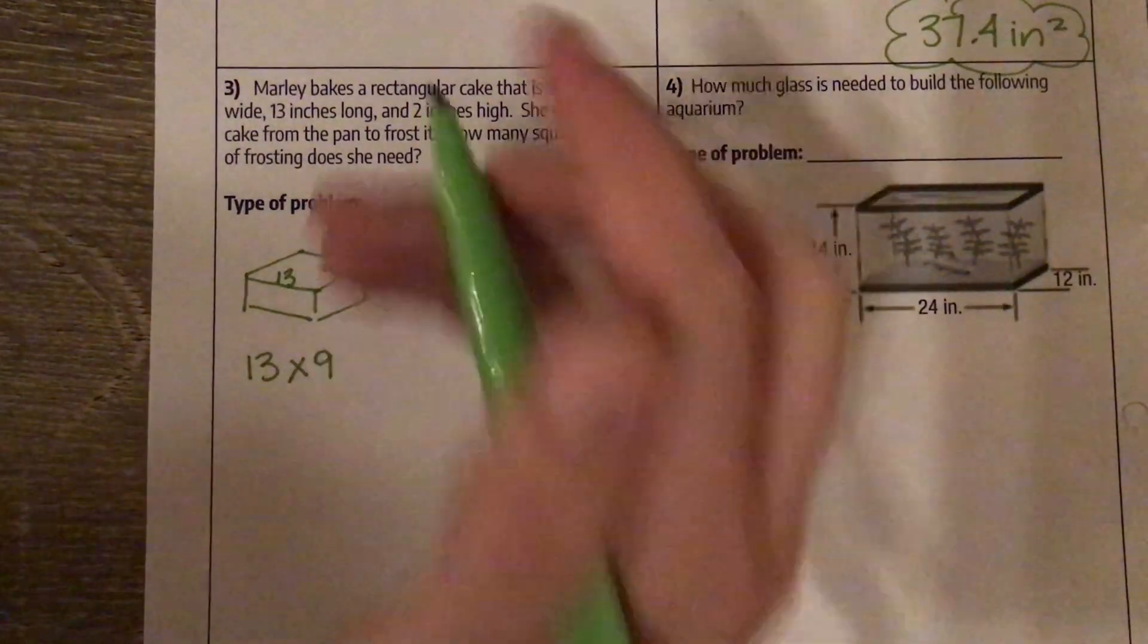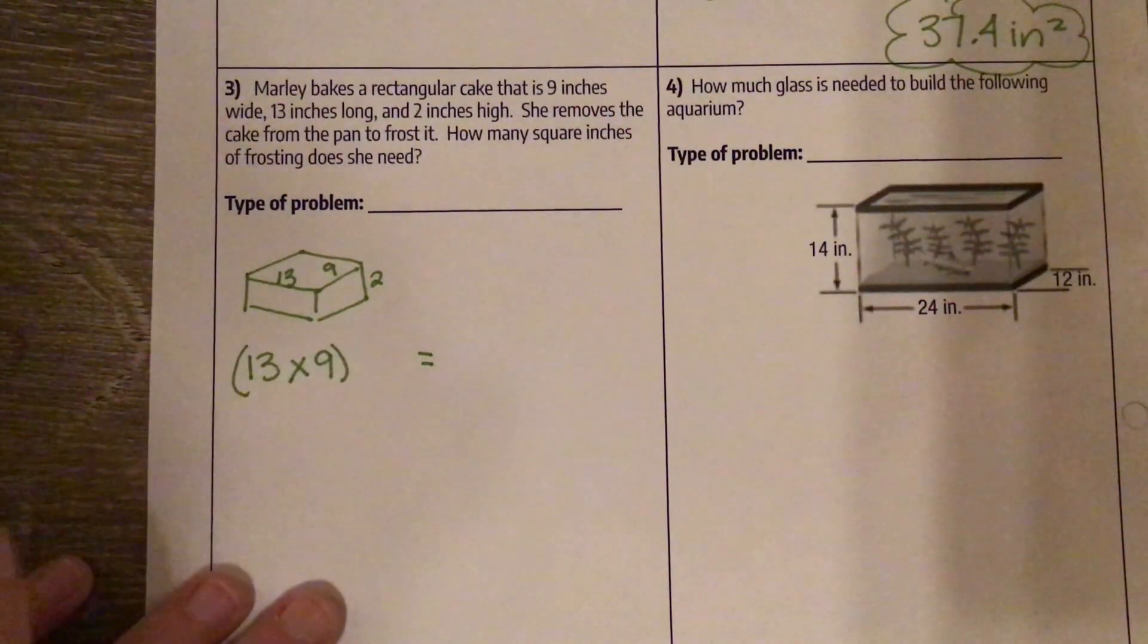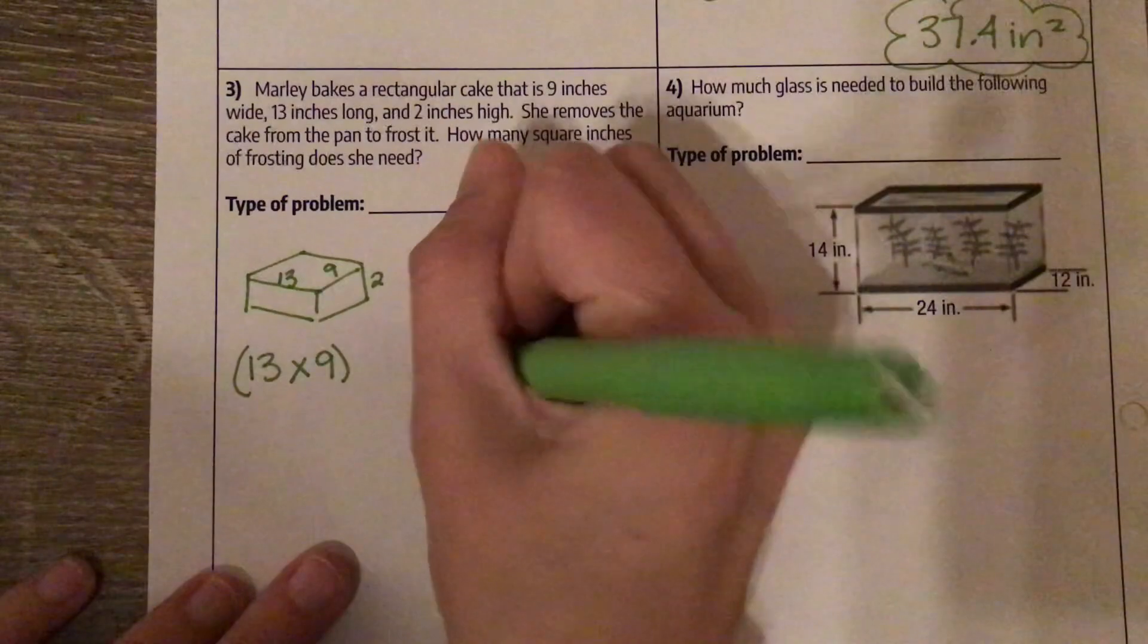We only need it once. We're not multiplying it by 2 because we are not frosting the bottom. So that's 117.